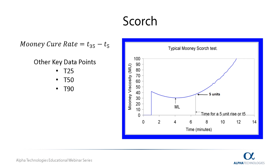T25 and T90 are important because they represent how viscous the material is becoming as time goes on — T25 being the time it takes the material to reach 25% cure and T90 for 90% cure. T90 is often used instead of T100 because the material will continue to cure after being removed from the process due to internal heat retention. As a result, the cross-linking will continue to completion while the material is cooling, thus saving valuable time and energy and allowing the process to become more efficient.